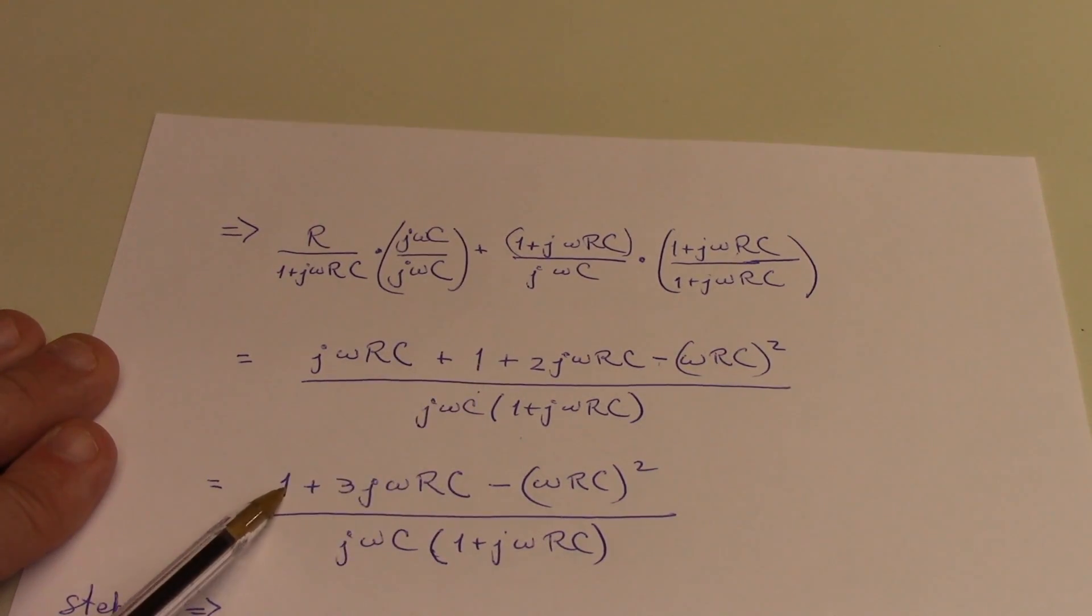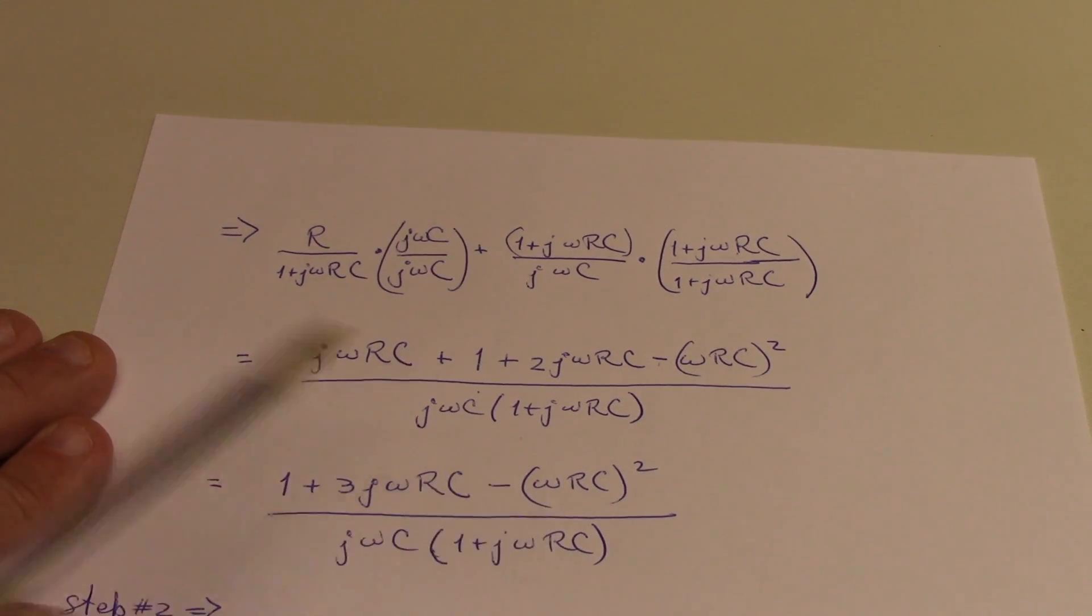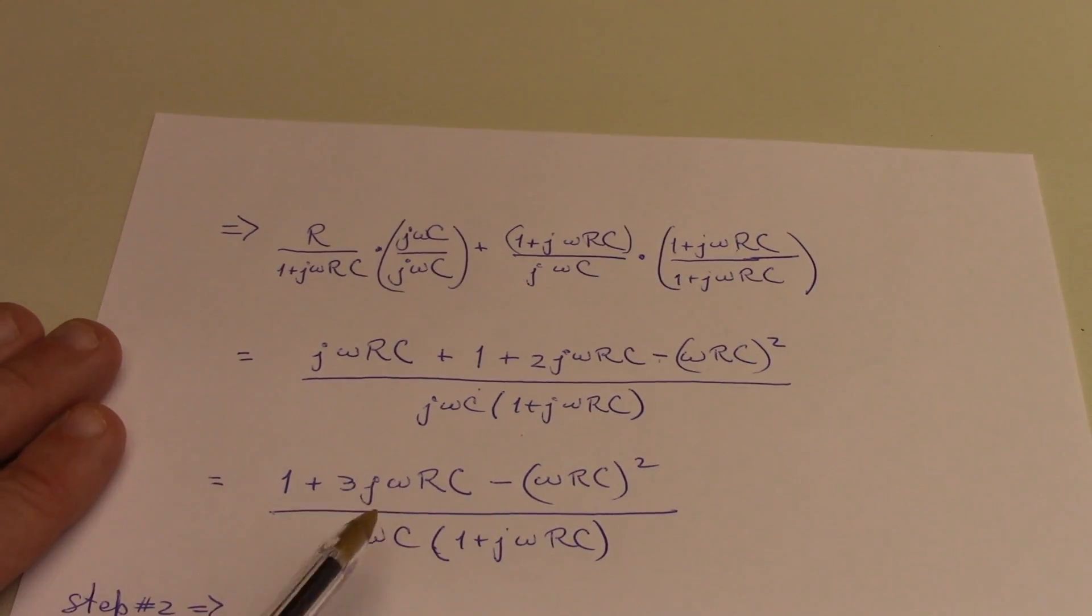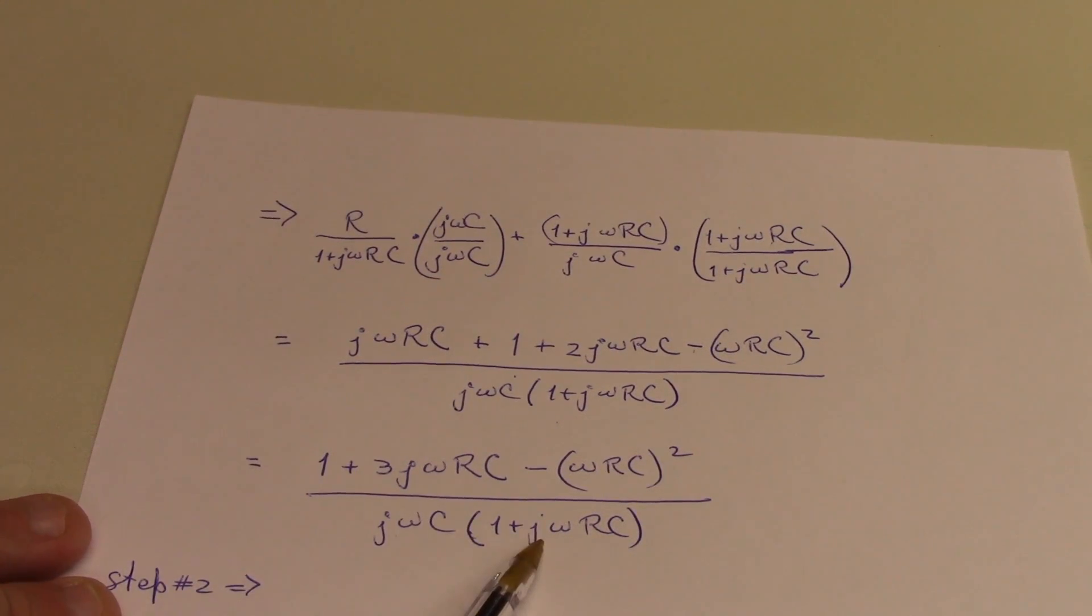I've got a 1, so I can include that there. And then I've just got a minus omega rc quantity squared, which I write there. And then the bottom, the denominator is just j omega c times 1 plus j omega rc. So I've found my common denominator of the denominator.